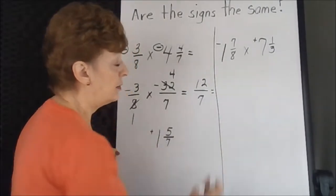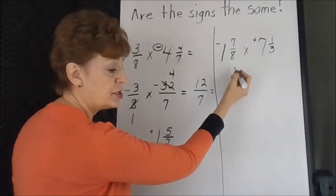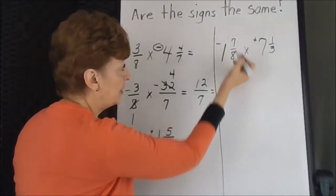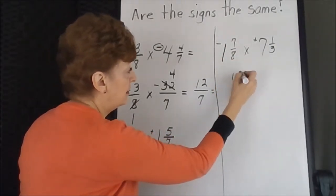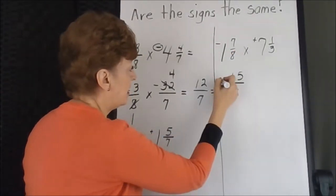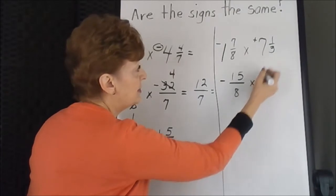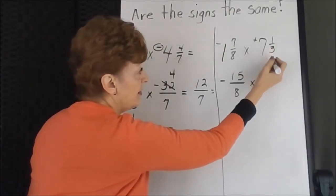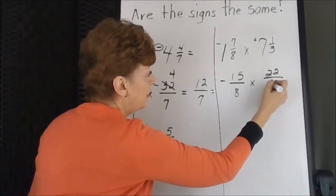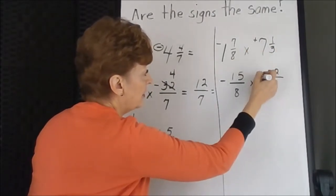Two mixed numbers. Let's change those to improper fractions. 8 times 1 is 8, plus 7 more is 15. 15 eighths. Carry the sign. Times. 3 times 7 is 21, and 1 more is 22. 22 thirds. Pull the sign with it.